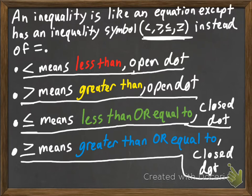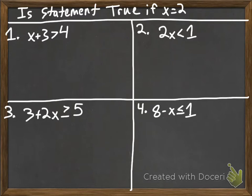Because these aren't equal signs, that means we can have a lot more things that make the statement not true. Let's test to see if the statement is true if we let x equal 2. In your group, substitute x equals 2 into these four inequalities and decide if they are true or not. Go ahead and pause the video and do that now.